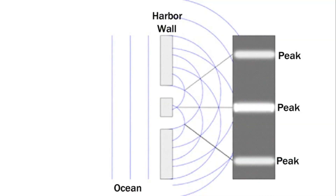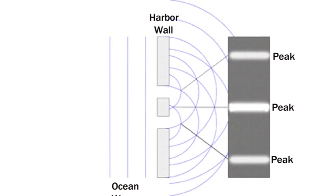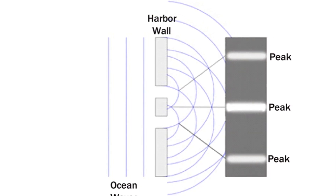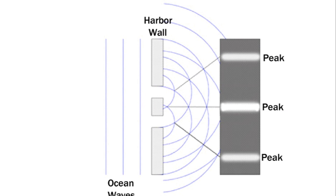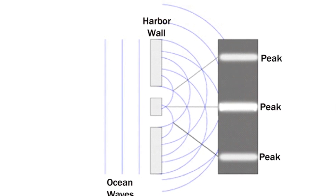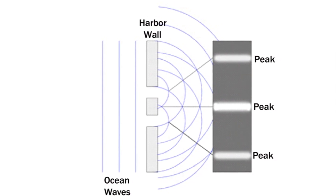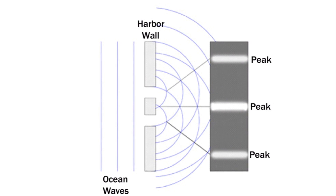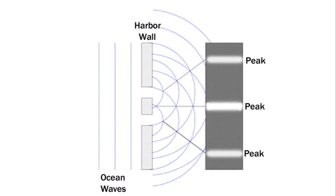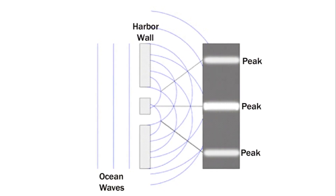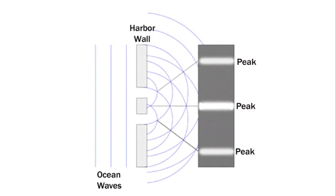Imagine what happens when incoming ocean waves meet an obstacle like a harbor wall that has two openings in it. The lines on the left of the diagram represent waves rolling in from the open ocean, but as soon as a wave passes through the openings, it effectively breaks up into two new waves, which then begin to spread out, colliding and interfering with each other. When two waves collide, their energy is combined. Peaks are added to peaks, forming even higher peaks, and troughs are subtracted from troughs, forming deeper troughs. The peaks are represented here by the bright stripes on the right, the troughs by the gray areas between. This is similar to the pattern that the electrons create.